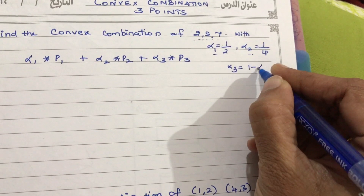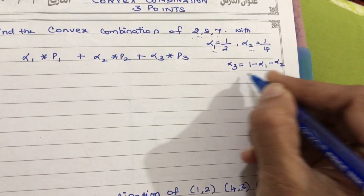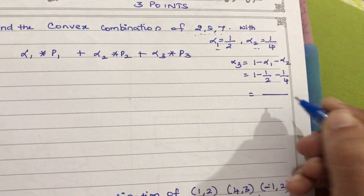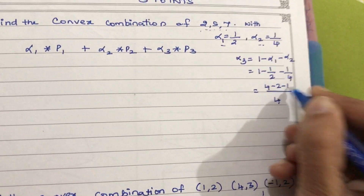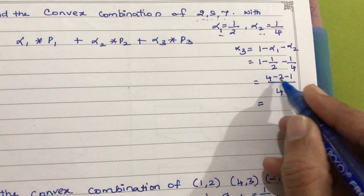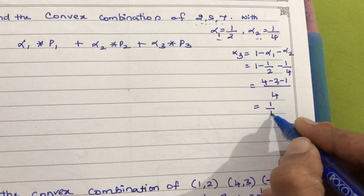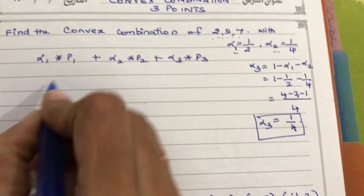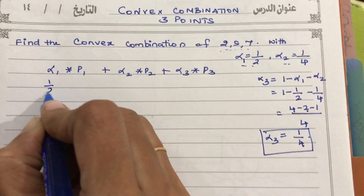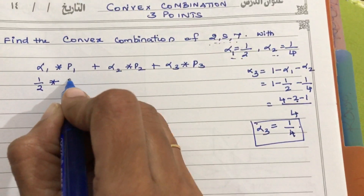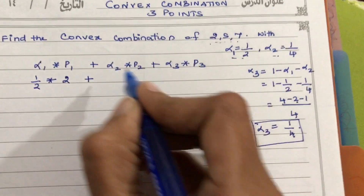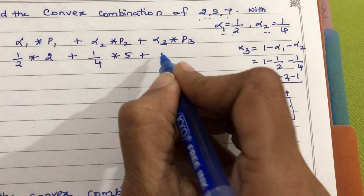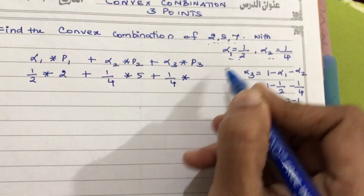Automatically you can give alpha 3 as equal to 1 minus alpha 1 minus alpha 2. So it is 1 minus 1/2 minus 1/4. The LCM will be 4, giving 4 minus 2 minus 1, which is 1. So alpha 3 is equal to 1/4. With these values: alpha 1 is 1/2 into P1 (which is 2), plus alpha 2 is 1/4 into P2 (which is 5), plus alpha 3 is 1/4 into P3 (which is 7).